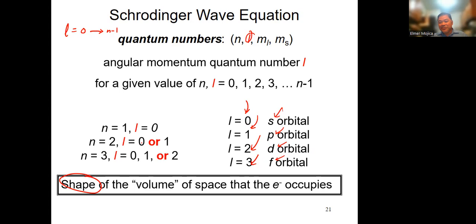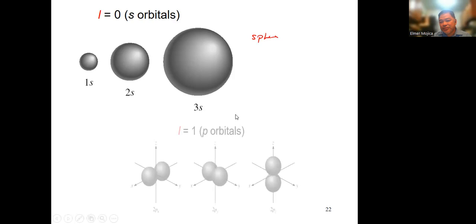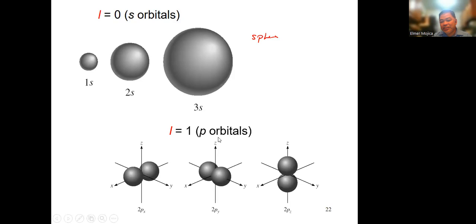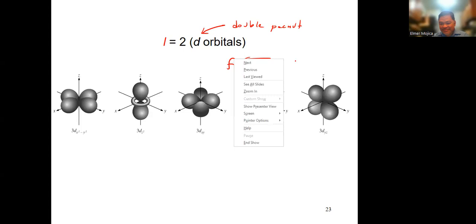The letter S corresponds to L=0, and the shape is a sphere. L=1 is a P orbital, shaped like a peanut. L=2 is a D orbital, shaped like a double peanut. The F orbital, when L=3, has the shape of a flower. So N gives you the size and L gives you the shape — if N=1, shape is 0; if N=2, shape can be 0 or 1.